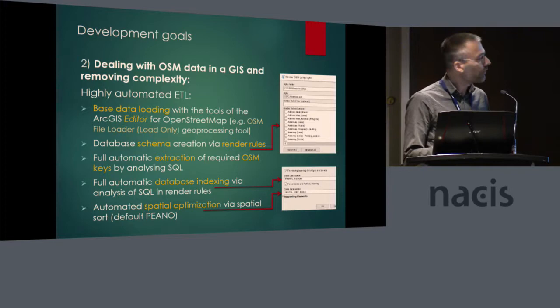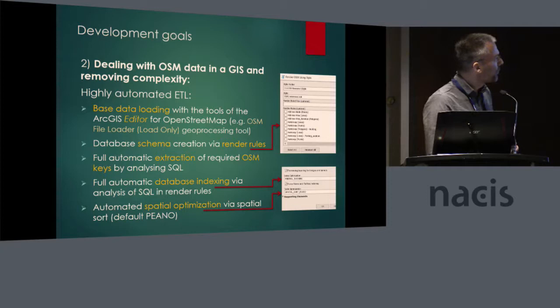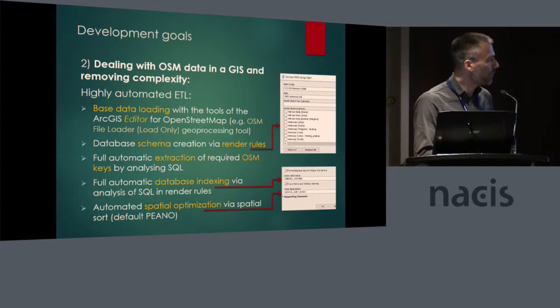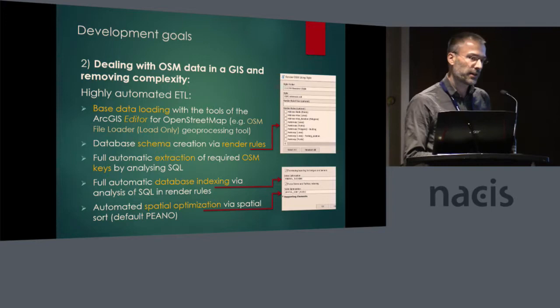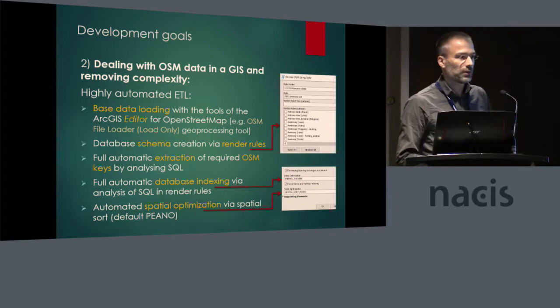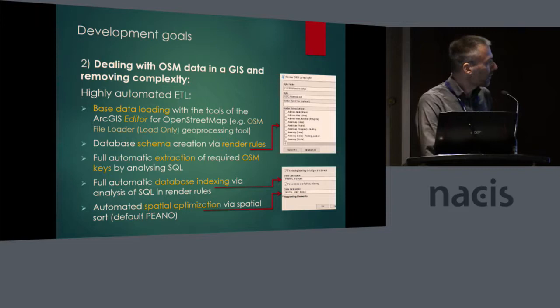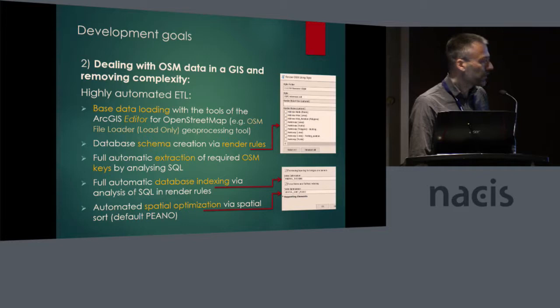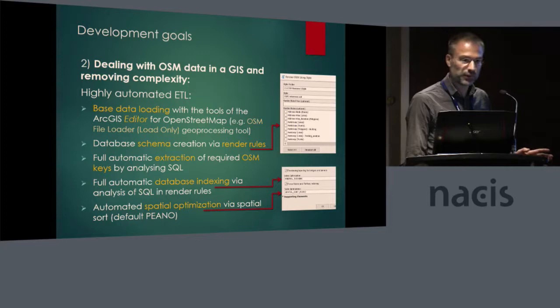OpenStreetMap data needs quite a bit of ETL — extraction, transform, and other processing. But I've tried to keep that to a minimum. You start out using my toolbox with the ArcGIS Editor for OpenStreetMap, and especially the import tools. There is an import tool created by Esri recently: the OSM File Loader load-only tool. It has the power to do parallel processing, so you can use multiple cores and import your data relatively quickly. It's not as fast as osm2pgsql for those who know it, but it does a really good job.